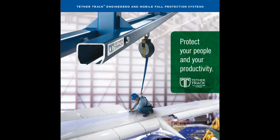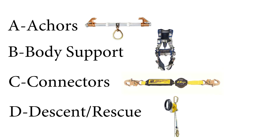This fall protection equipment, when used as an entire system, is commonly referred to as the ABCs and Ds of fall protection. They include anchors, body support, connectors, and descent and rescue.